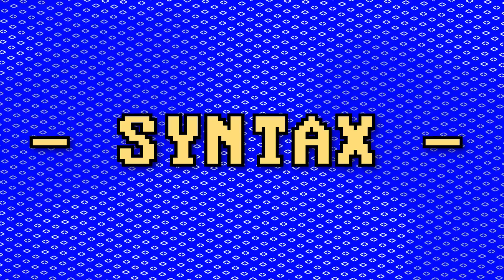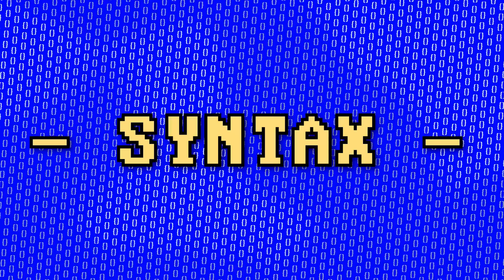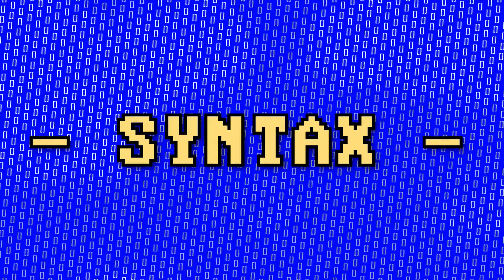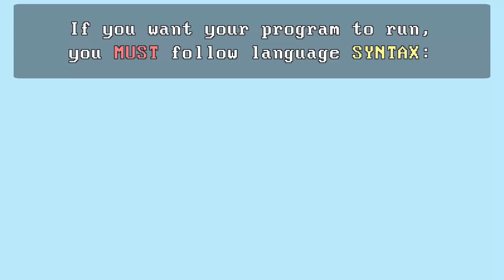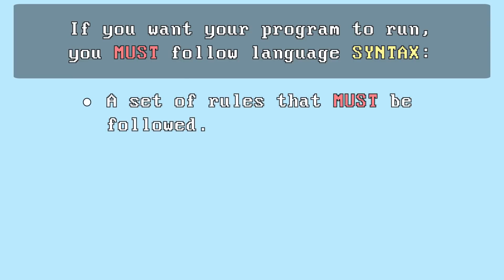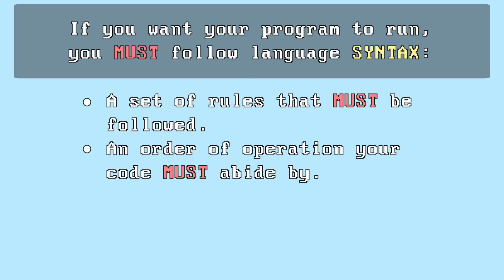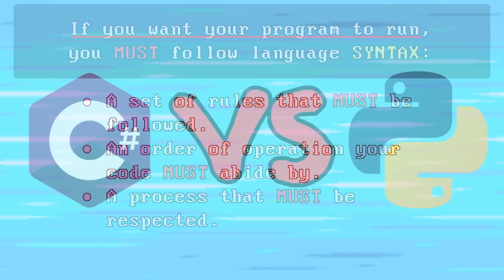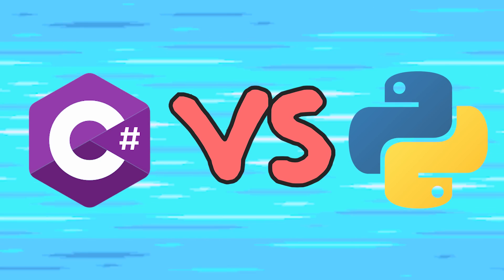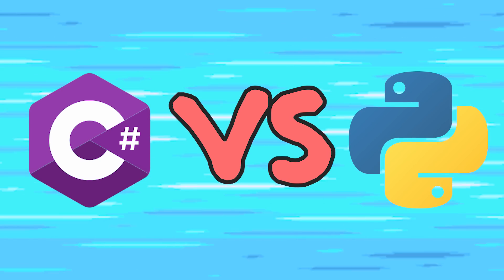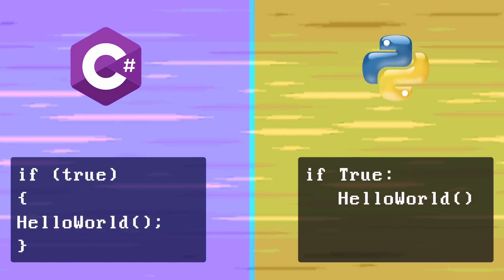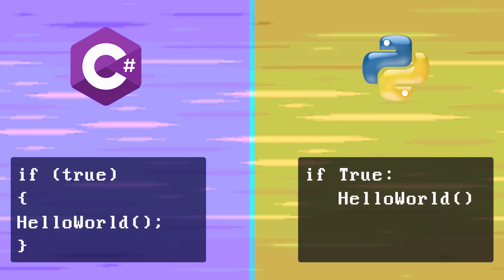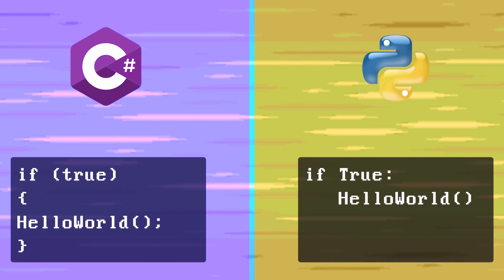If you own a program in C# or Python, it's important to understand their syntax. But first, what is syntax? Syntax in relation to programming is a set of rules that must be followed — a process your code must abide by if you want your program to run. Today, we're going to look at the syntax for two different languages, see the differences between them, and you'll pretty much learn two languages at once.